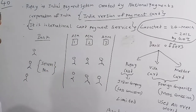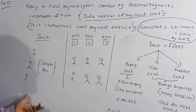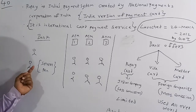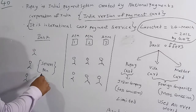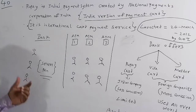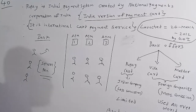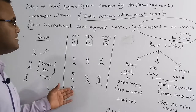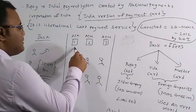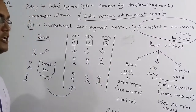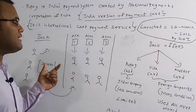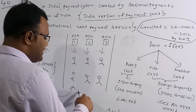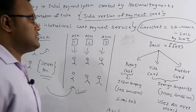Previously, people had to go to banks to collect money and stand in long queues. Then ATMs were introduced, making it easier. Banks offer three types of cards for ATM services: RuPay card, Visa card, and Mastercard.